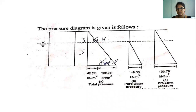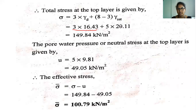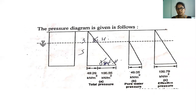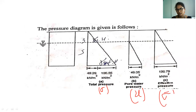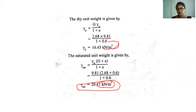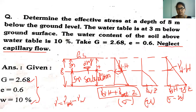These values — total stress σ, pore water pressure u, and effective stress σ' — are indicated in the pressure distribution diagrams. Pressure is in kN/m² and unit weight in kN/m³. Depending on the given values, we determine γd and γsat accordingly. Thank you.